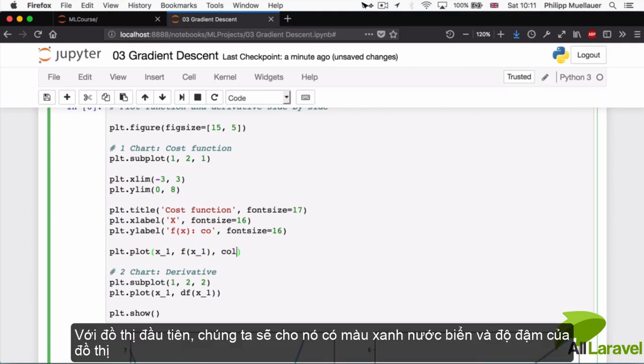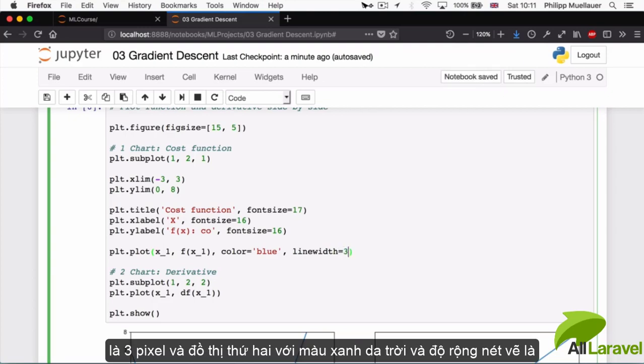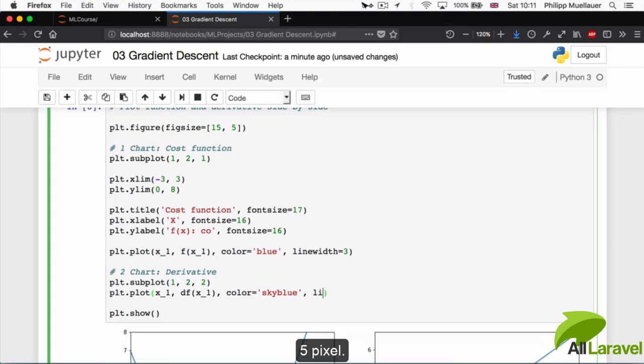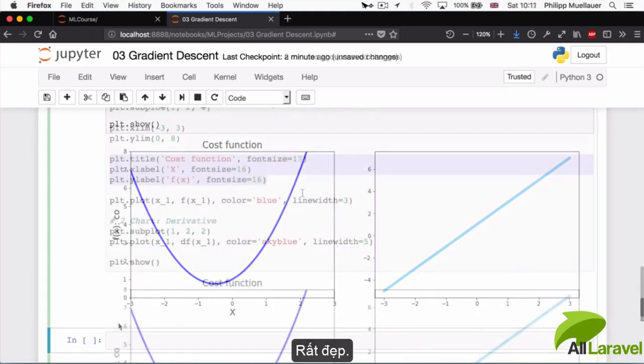For the first chart, let's explicitly state that it should be blue and that it should have a line width of maybe 3. And for our second chart, we're going to give it the color sky blue and a line width of 5. How does that look? Pretty good.